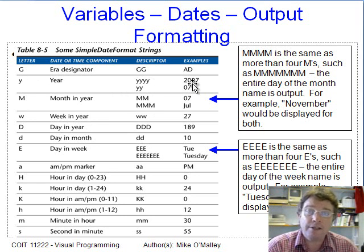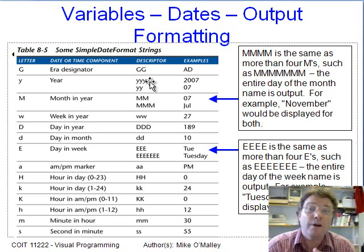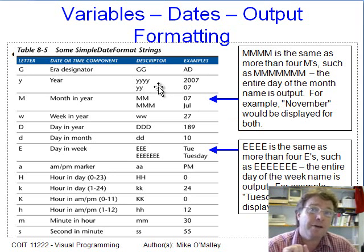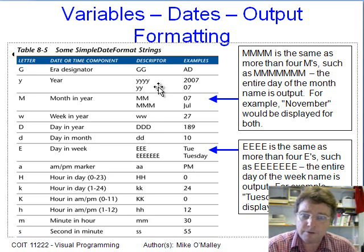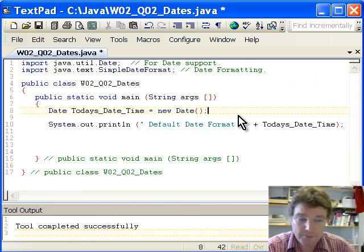Using four y's ensures you always get the full year — even if we're in year 100,050, there's no truncation. More than four y's is equal to four y's, and that applies to all Java date formatting attributes. So we need three uppercase D's, then a slash or minus sign, then four lowercase y's. Let's declare a SimpleDateFormat object — I'll call it daysInYearFormat — instantiated as 'new SimpleDateFormat("DDD-yyyy")'.